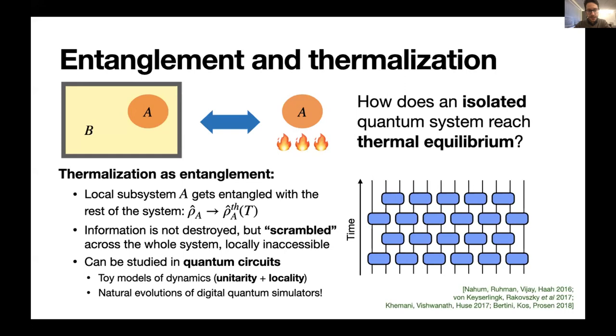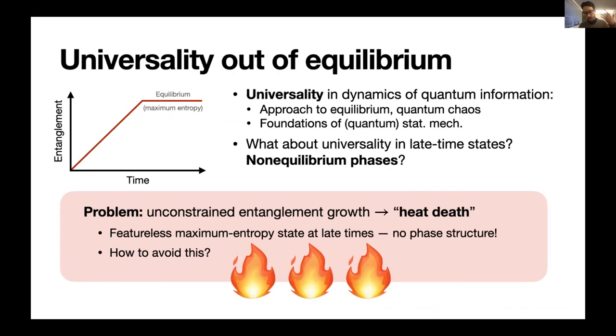So with quantum circuits, we can understand universal aspects of the approach to equilibrium, such as the growth of entanglement, spreading of operators, onset of quantum chaos, et cetera, which is very important from the standpoint of understanding foundations of quantum statistical mechanics. But what if we wanted to understand or discover universal physics, not in the approach of equilibrium, but in late time states themselves?